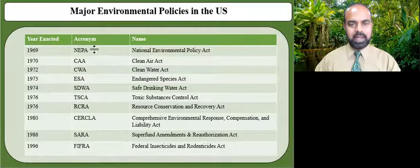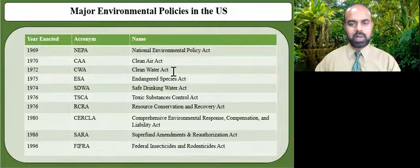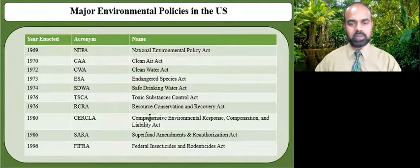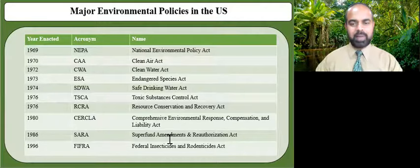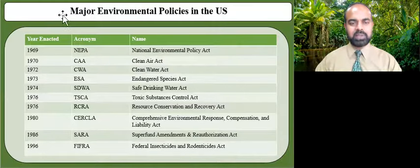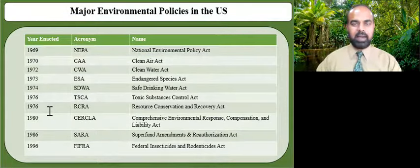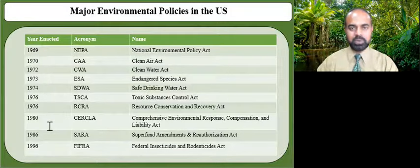From 1969 with the enactment of the National Environmental Policy Act, NEPA, we have had quite a lot of environmental regulations such as the Clean Air Act, Clean Water Act, Endangered Species Act, Safe Drinking Water Act, Toxic Substances Control Act, and Resource Conservation and Recovery Act, to name some of the most important ones, wrapping up with CERCLA, the Environmental Response Compensation and Liability Act, Superfund Amendments and Reauthorization Act, and Federal Insecticides and Rodenticides Act. Many of these laws were enacted in the early to mid-1970s and then further amended and revised in the mid-80s to mid-90s.